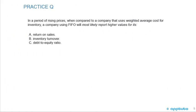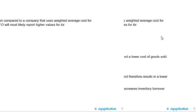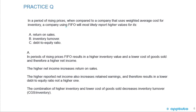Practice question: In a period of rising prices, when compared to a company that uses weighted average cost for inventory, a company using FIFO will most likely report higher values for its A) return on sales, B) inventory turnover, or C) debt to equity ratio? This is a good question — it compares different methods and asks about the impact on certain ratios such as return on sales, inventory turnover, or debt to equity.